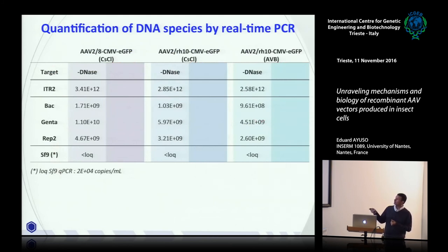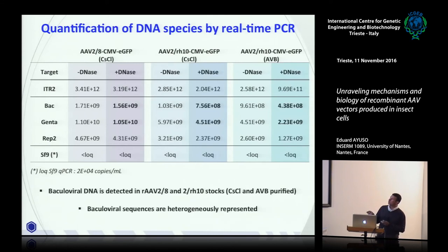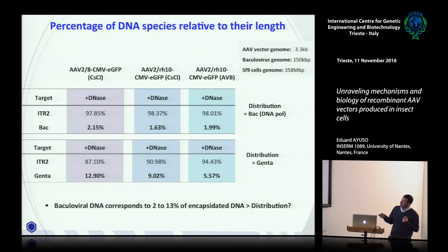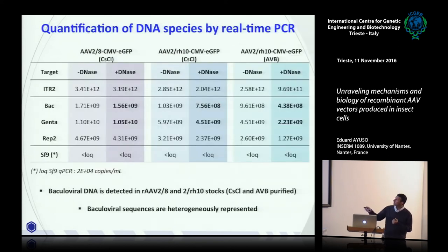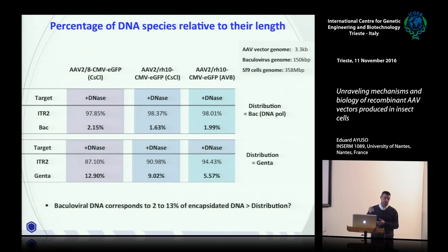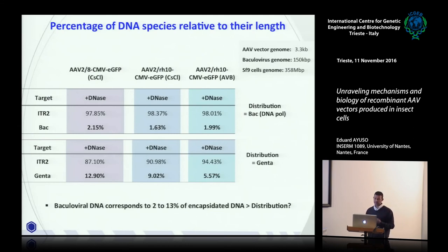Calculating percentages: if you take the far baculovirus sequence relative to ITR copies, you get about 1-2% contamination. But if you take the gentamicin sequence close to the ITR, you get about 10% — so depending on which qPCR target you choose, you get very different answers. This is exactly the problem of using qPCR. We therefore adapted the NGS methodology — developed by Adrian for mammalian cells — to the insect cell system, with all steps adapted for baculovirus reference sequences and using SF9/SF21 cell genome sequences.